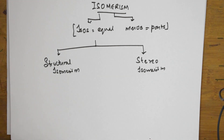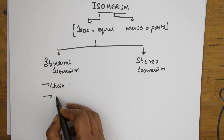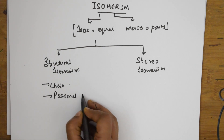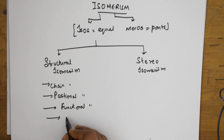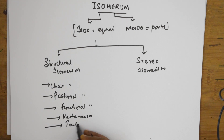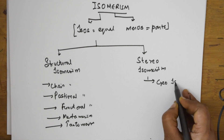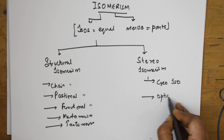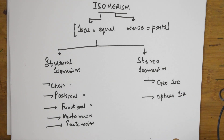Structural isomerism has different categories: chain isomerism (also called nuclear isomerism), positional isomerism, functional isomerism, metamerism, and tautomerism. Stereo isomerism is again studied under two categories: geometrical isomerism, where we study cis and trans isomers, and optical isomerism, where I'll be teaching about enantiomers, diastereomers, and the R/S system.